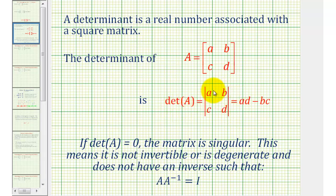So the determinant of this two by two matrix in this form is equal to a times d minus b times c.